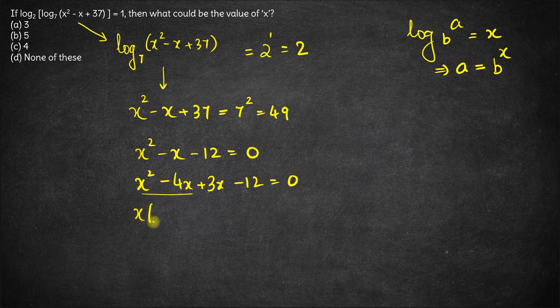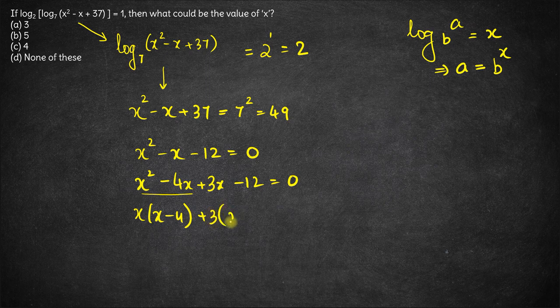Taking x common here, we have x minus 4 remaining, and taking plus 3 common here, we have x minus 4 remaining, which equals 0.